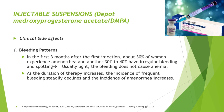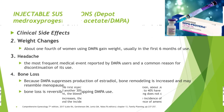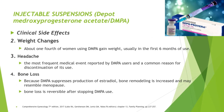The most common side effect of DMPA is a change in the bleeding pattern. In the first 3 months after the first injection, about 30% of women experience amenorrhea, and another 30% to 40% have irregular bleeding or spotting, which is usually light and does not cause anemia. As the duration of therapy increases, the incidence of frequent bleeding declines and amenorrhea increases. Other side effects include weight changes, headache, and bone loss — which is why calcium supplements are usually recommended for patients on DMPA.